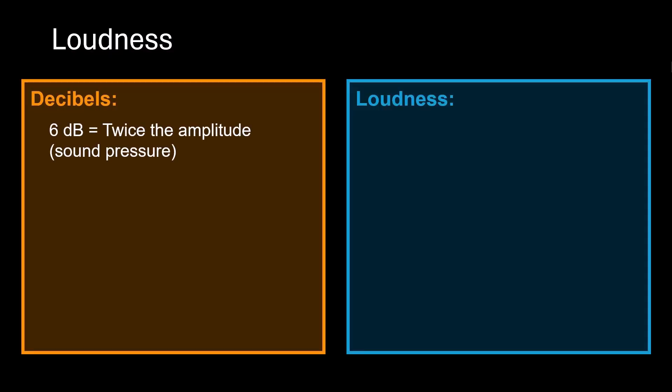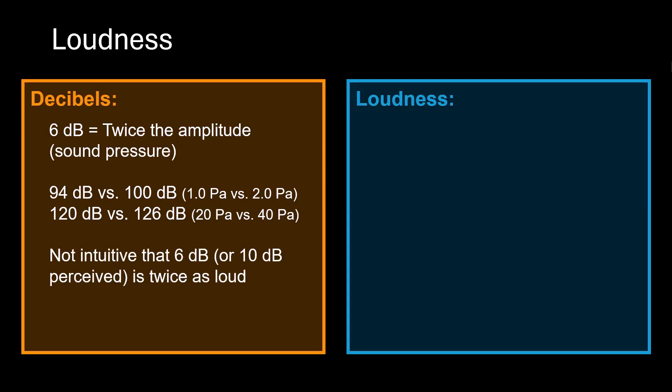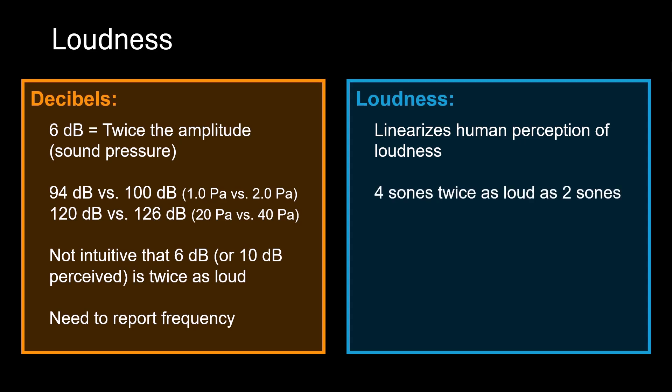So let's recap really quick. 6 dB is twice the amplitude in sound pressure. So 94 dB versus 100 dB is the same as 1 pascal versus 2 pascals. As you can see, very nonlinear. It's a logarithmic unit. It's not really intuitive that a doubling of sound pressure is not equal to a doubling of loudness. And you have to report the frequency if you're going to use a dB method, because it's going to change depending on the frequency. Whereas loudness, or a sone, linearizes the human perception of loudness. So 4 sones is twice as loud as 2 sones. Or 30 sones is 1.5 times louder than 20 sones. And it's got that frequency dependency already built in.